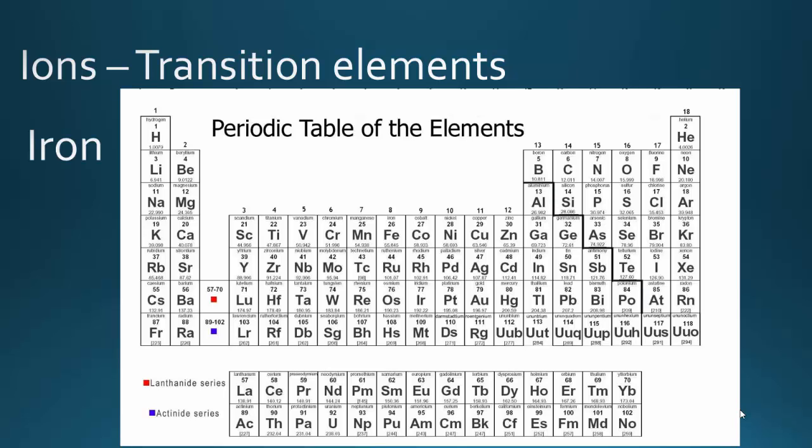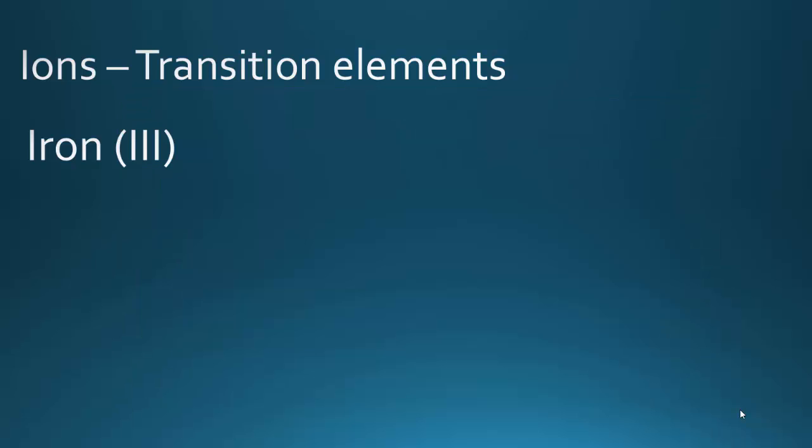So let's take a look at an example: iron. We look on the periodic table, we find iron here, and so we know that it's a transition metal. Therefore, we cannot tell its ionic charge based upon its position on the table. There are two possible ions. There's iron followed by the Roman numeral III, which can sometimes be written like this. This means you would have a 3+ ion, and you would pronounce this as iron three.